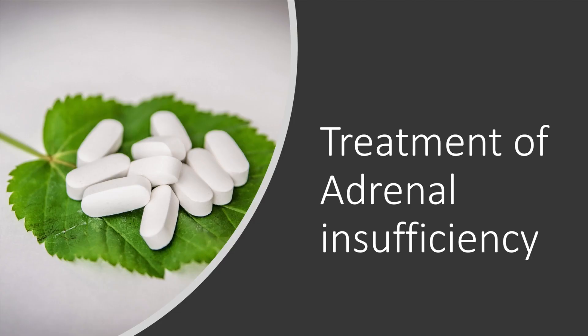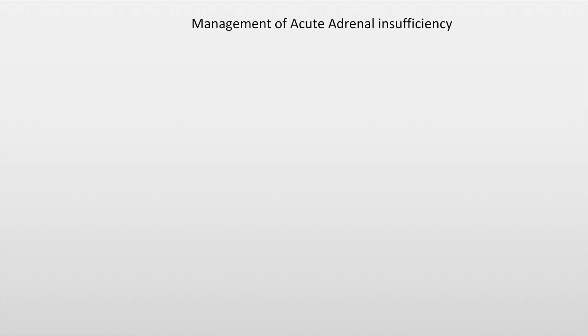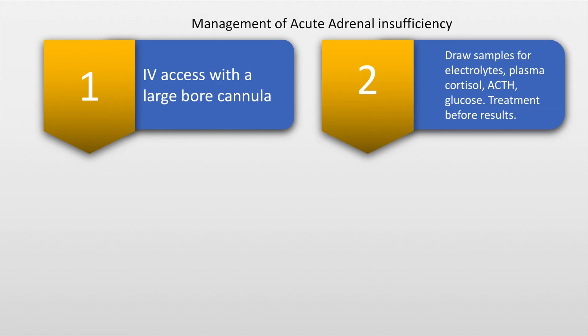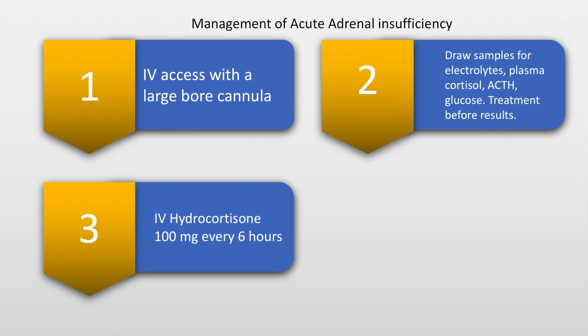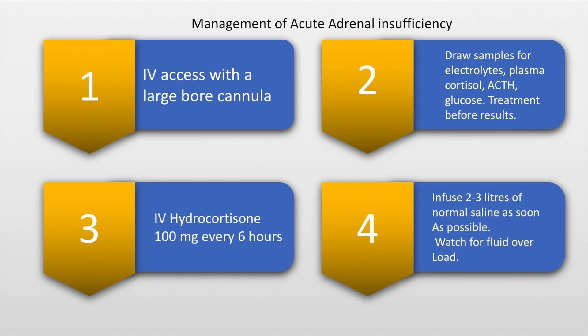The treatment of Addison's disease includes IV access with a large-bore cannula. Samples must be drawn for electrolytes, plasma cortisol, ACTH, and glucose, and treatment must begin before the results are available. IV hydrocortisone 100 milligrams every six hours forms the mainstay of initial treatment, and resuscitation with 2–3 liters of normal saline must be done as soon as possible.